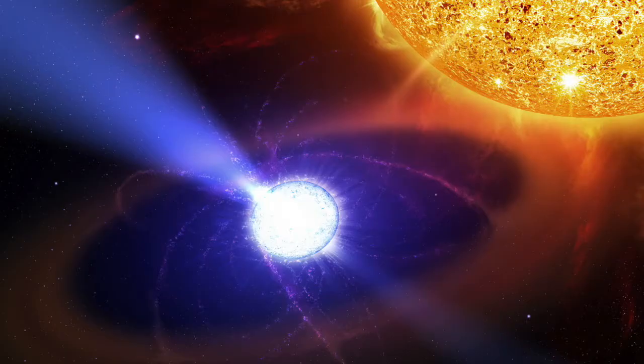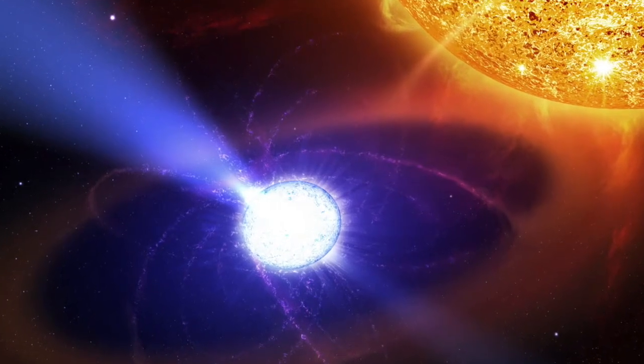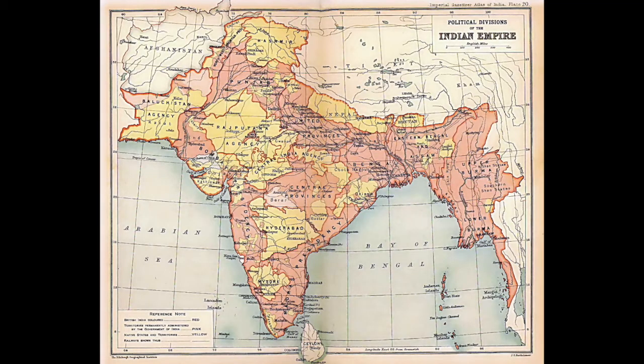When I hear the name Subramanian Chandrasekhar, I generally think of the Chandrasekhar limit, which is essentially a brilliant mathematical physical proof that has to do with some white dwarfs, some stars and black holes. Chandrasekhar grew up in southern colonial India where his dad was a math professor.